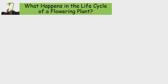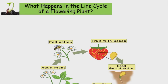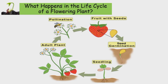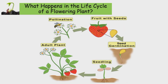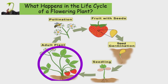Do you know what happens in the life cycle of a flowering plant? Let's discuss. Look at this picture. The strawberry plant reproduces from seeds. The seeds germinate into seedlings, the seedlings develop into adult plants, and the adult plants bear flowers that will become fruits through pollination.